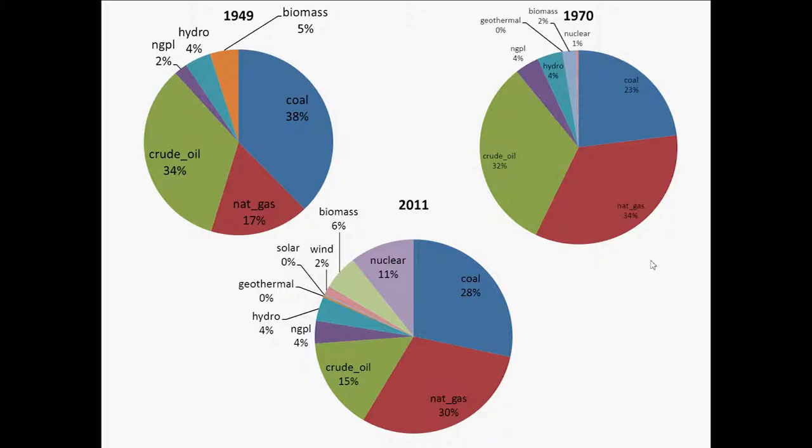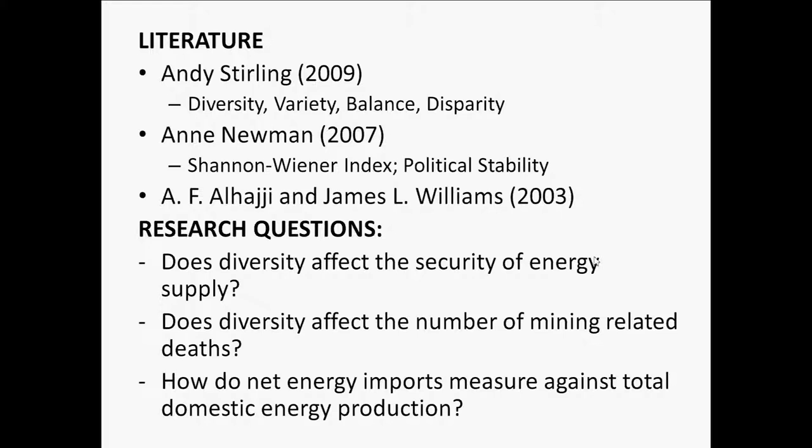We'll take a closer look at the human aspect of energy diversity and how it affects mining injuries and fatalities in a different presentation. Looking at existing literature: Andy Sterling from Sussex University in 2009 defines energy diversity in terms of four variables — diversity, variety, balance, and disparity. He defines diversity as an evenly balanced reliance on a variety of mutually disparate options, and variety as the number of diverse categories of options into which an energy system may be apportioned.